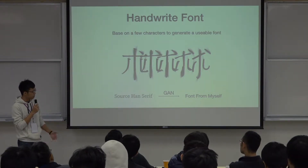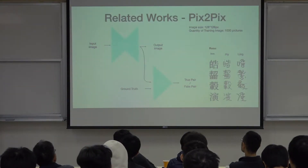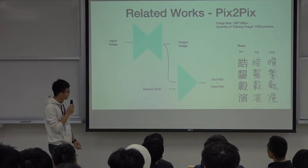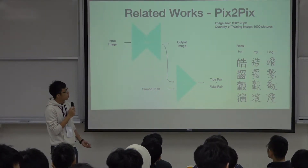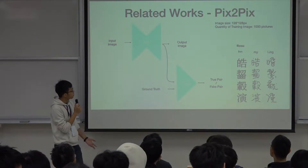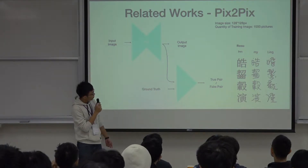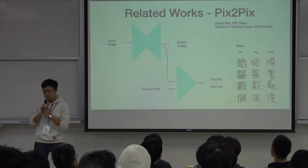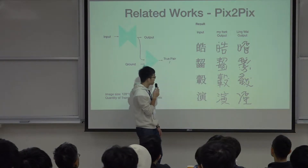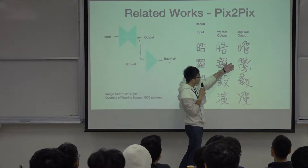This is an image-to-image transfer problem. When it comes to image-to-image transfer, we think of pixel-to-pixel, which uses a U-Net-assisted generator. So we tried to use this model to solve our problem. We generate images at a resolution of 128×128, using 1,000 Chinese character pictures. The result looks like this — this is my font, and this is Linhui. We can see the result is not so good; we cannot even recognize what character it is in the Linhui output.